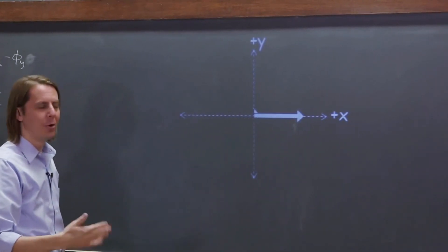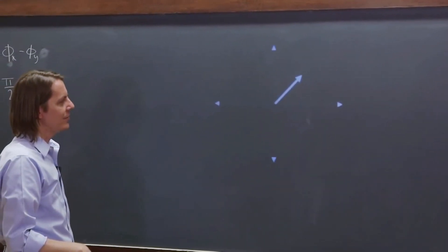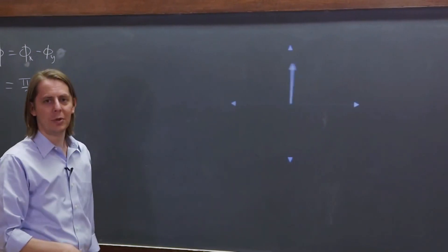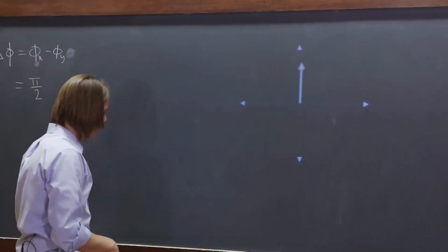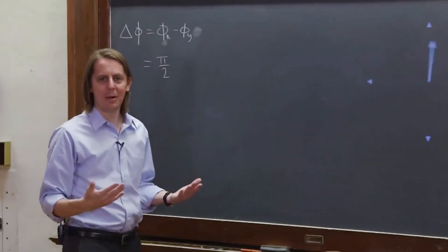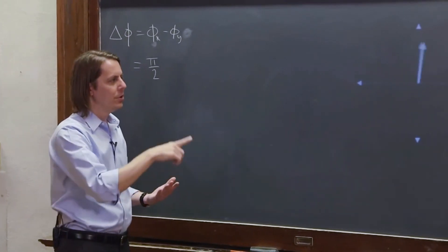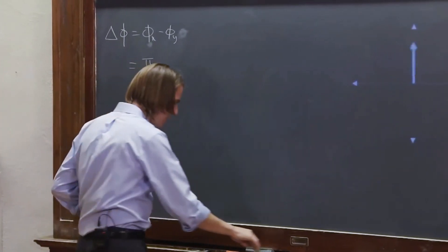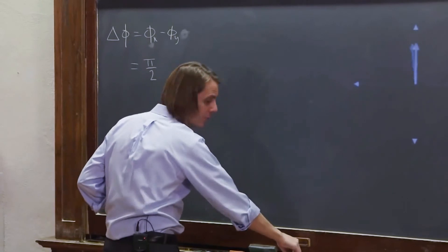So this is circularly polarized light, and we could look at it like this. That's what it's really doing. So if you take those two simple sinusoids, put them out of phase by pi over 2, then the E field goes around in a circle. And this is called circular polarization.